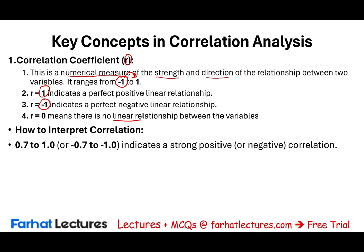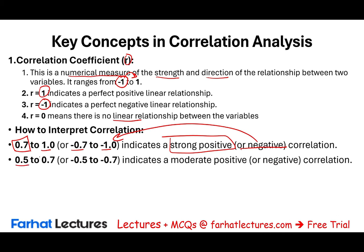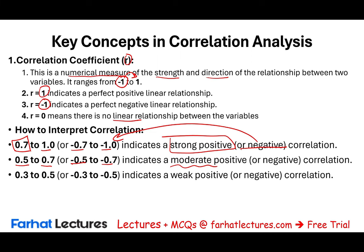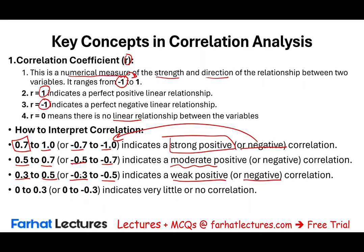To interpret r further: if r is between 0.7 and 1 or between negative 0.7 and negative 1, it indicates a strong positive or strong negative correlation. If r is between 0.5 and 0.7 or between negative 0.5 and negative 0.7, it indicates a moderate positive or moderate relationship. If r is between 0.3 and 0.5 or negative 0.3 and negative 0.5, it indicates a weak positive or weak negative relationship. And if r is between 0 and 0.3, it indicates little to no correlation.